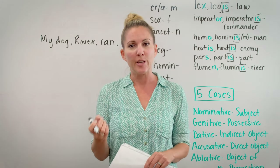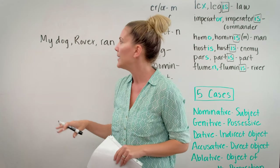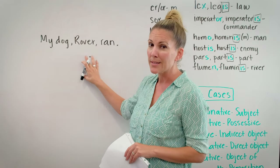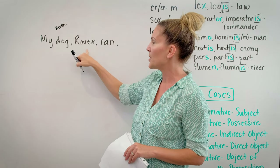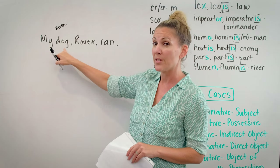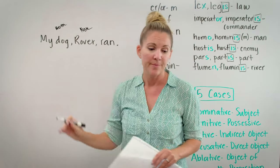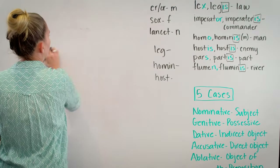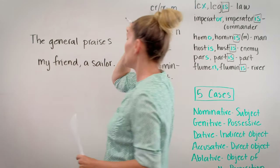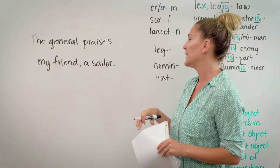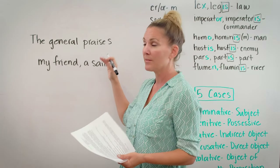In Latin, they have appositives just like we do in English. The case you put the appositive in depends on the noun it's identifying. If we were translating 'my dog Rover ran' into Latin, 'dog' is the subject — nominative. Since 'Rover' is telling you more about a nominative subject, 'Rover' would also be in the nominative case.